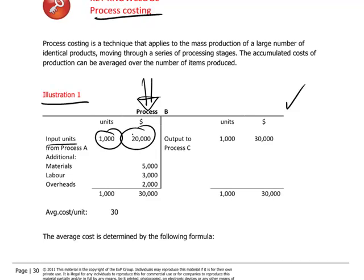During Process B, there's going to be the addition of the following costs to the 1,000 units: we're adding $5,000 worth of materials, $3,000 worth of labor, and $2,000 worth of overheads.